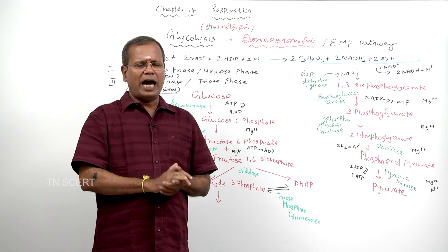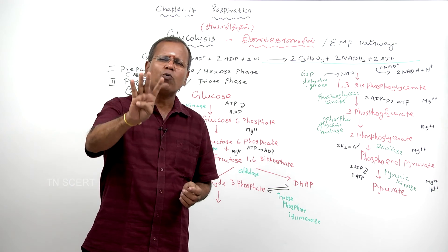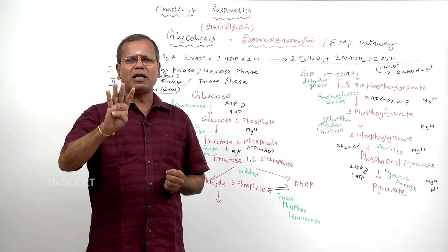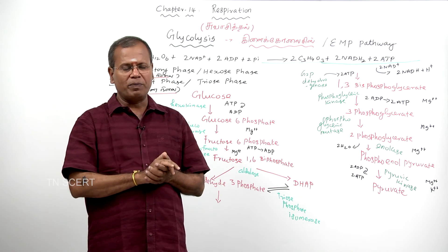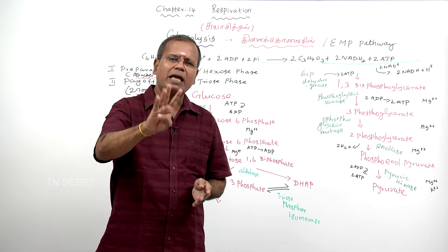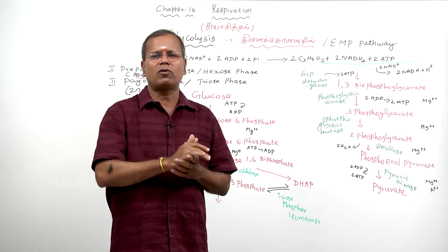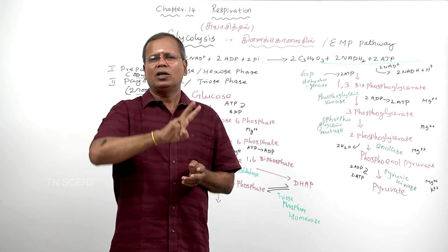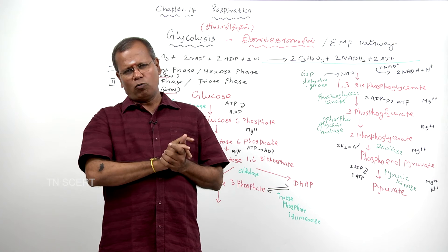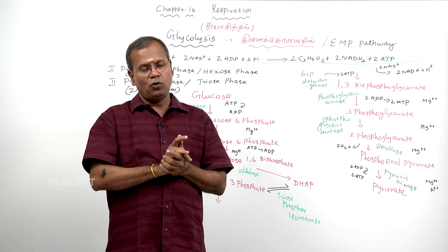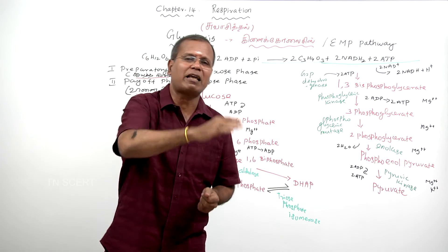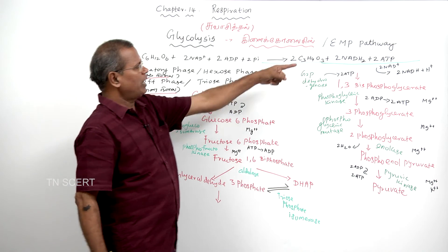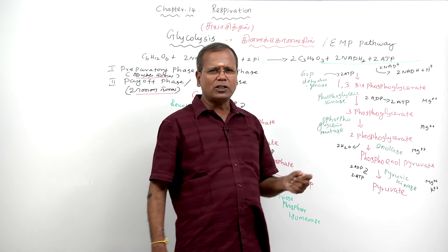At the end of glycolysis, 4 ATP and 2 NADH2 molecules are formed in the payoff phase. Since 2 ATP are consumed in the preparatory phase, the net gain is 2 ATP and 2 NADH2.